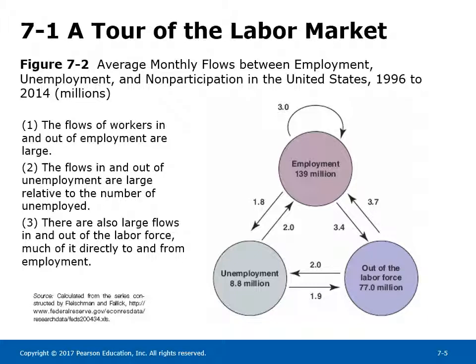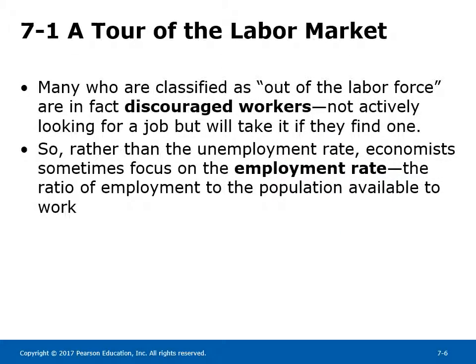This reflects the fact that unemployment on average lasts a short time. However, in times when the unemployment rate is higher, the average duration of unemployment increases. The unemployment rate may understate the true extent of unemployment because discouraged workers who have stopped looking for work are not counted as unemployed. Many who are classified as out of the labor force are in fact discouraged workers — not actively looking for a job, but who will take one if they find it. So rather than the unemployment rate, economists sometimes focus on the employment rate, the ratio of employment to the population available to work.